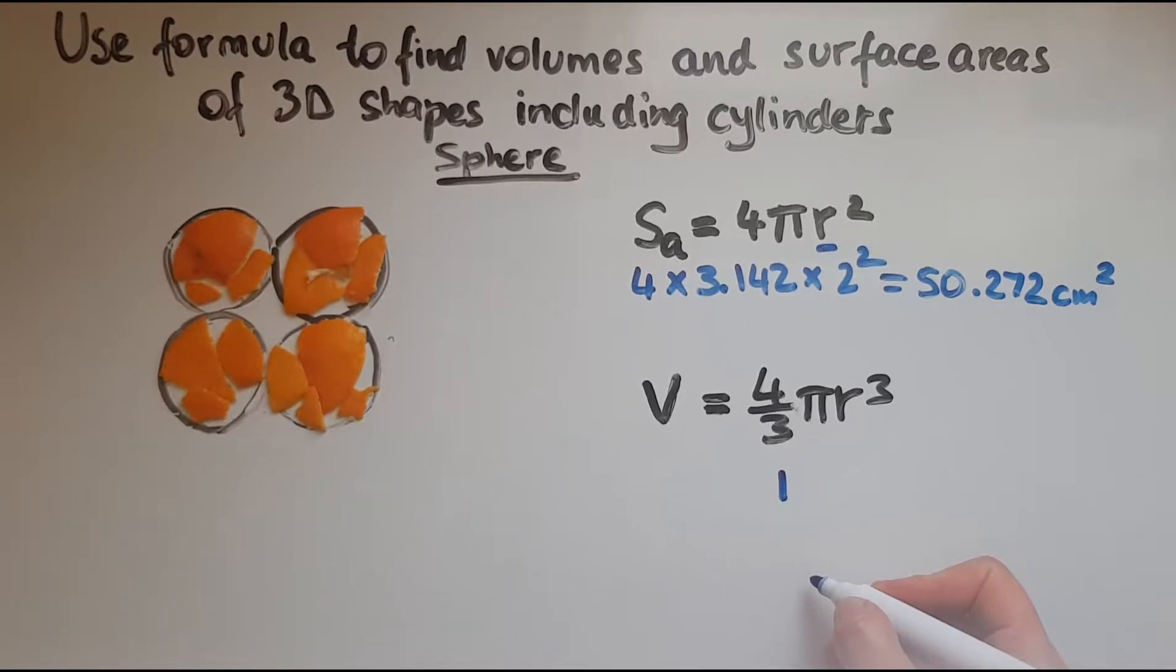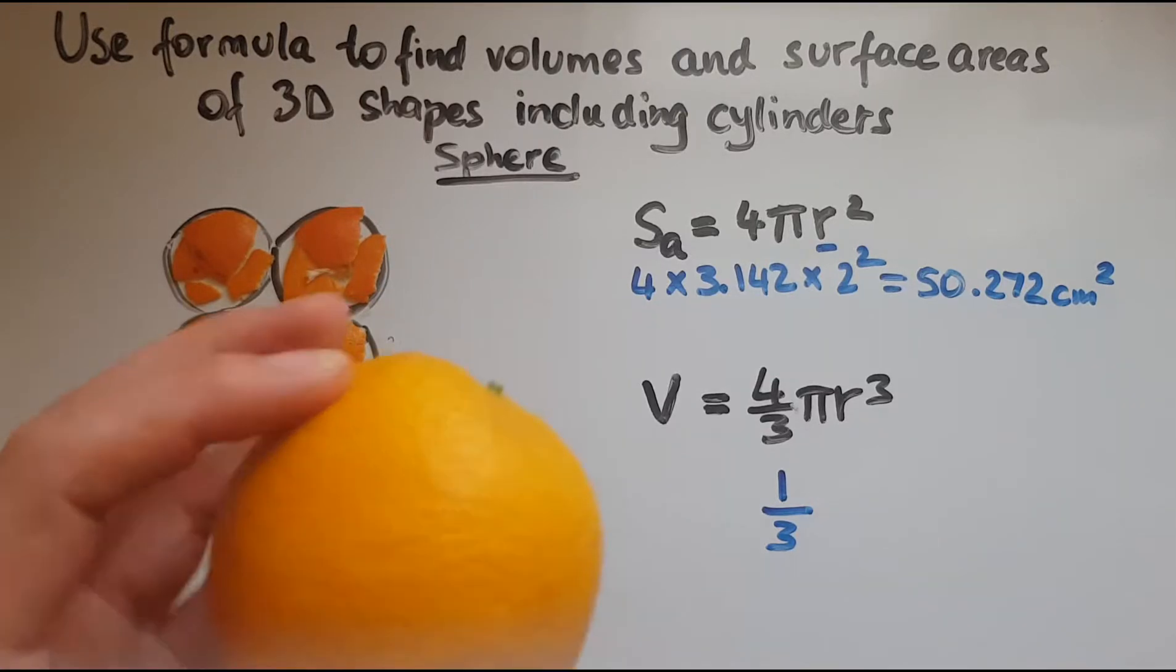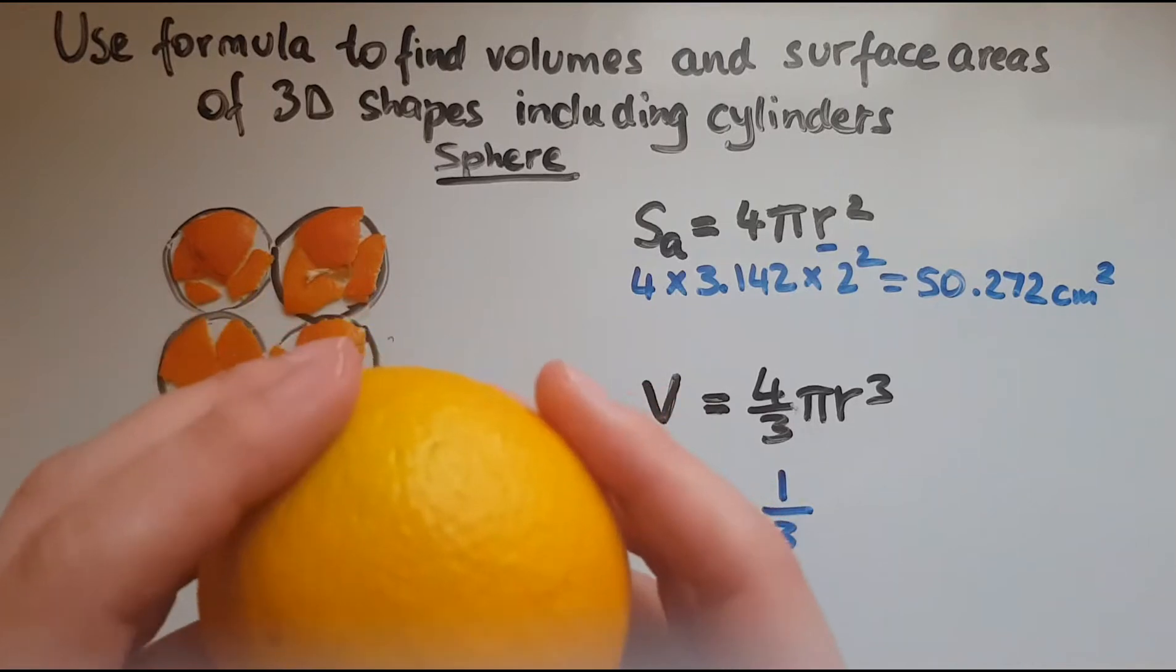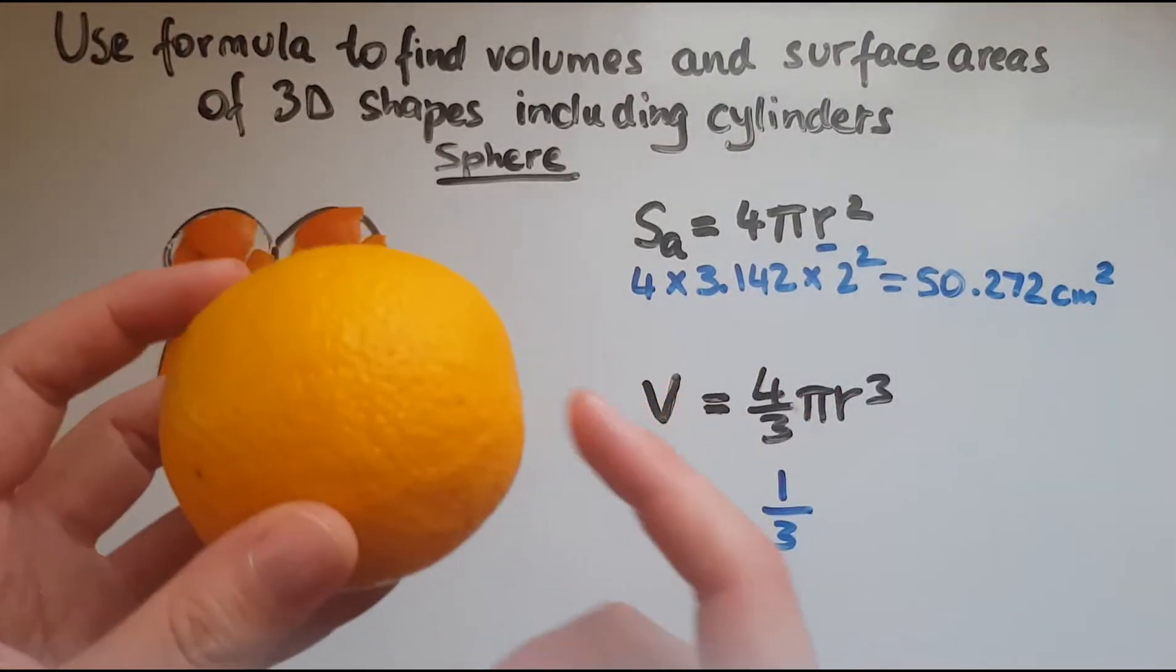cones or pyramids, which is 1/3 πr²h. But there's not a different height this time because it is radius all around when it comes to a sphere. We'll have a look at what that means.